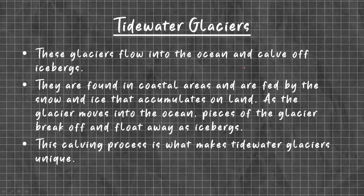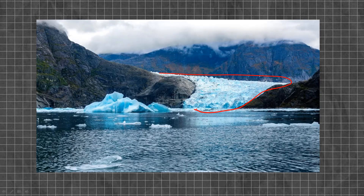Tidewater Glaciers flow into the ocean and calve icebergs. They are found in coastal areas and are fed by snow and ice that accumulated on land. As the glacier moves into the ocean, pieces of the glacier break off and float away as icebergs — this calving process is what makes tidewater glaciers unique. The ice and snow from land accumulates at the shore or coastal area, and due to pressure there is breakage of the glacier, forming icebergs that float into the sea or ocean.